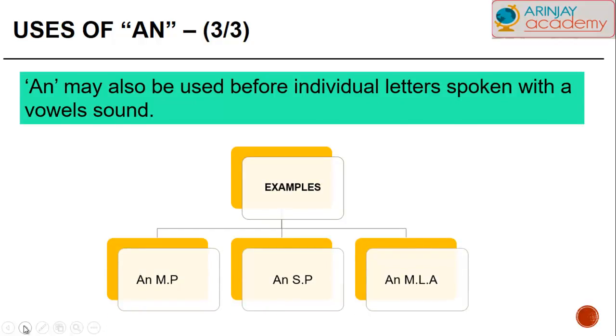AN may also be used before individual letters spoken with vowel sound. For example, an MP, an SP, an MLA. Here, the letters are consonants. For example, M. But the sound is of E-N. Therefore, we say an MP, an SP, or an MLA.